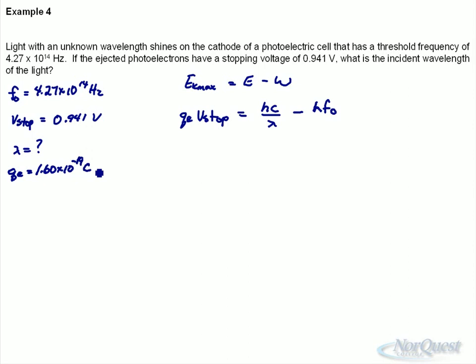That's why I chose this example, basically to help you with the manipulation. I'm going to move the work function, or hf₀, to the other side. So it becomes qₑV_stop + hf₀ equal to hc over lambda.